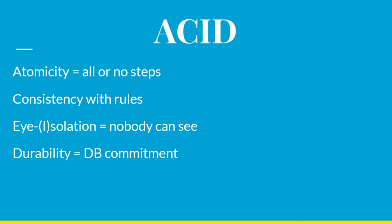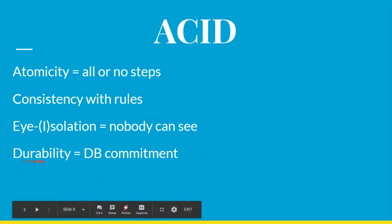To review, your memorization tricks are: Atomicity equals all or none steps — associate the A in atomicity with the A in all steps, and think of eBay. C is for consistent with rules — all steps have to follow the same logical rules. I is for isolation — think of the I and the word 'see,' so isolation equals nobody can see that the transaction is happening. D is for durability — the D in durability and the D in database: durability equals database commitment.